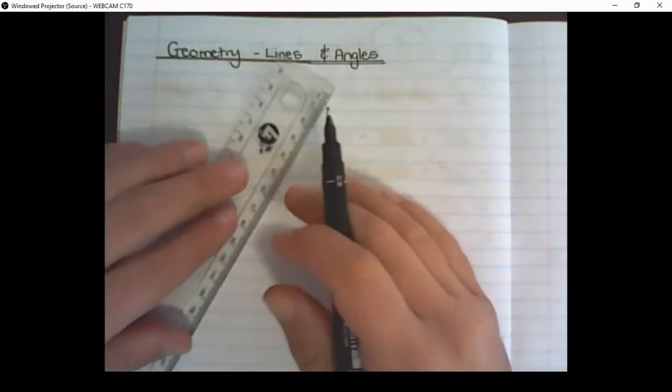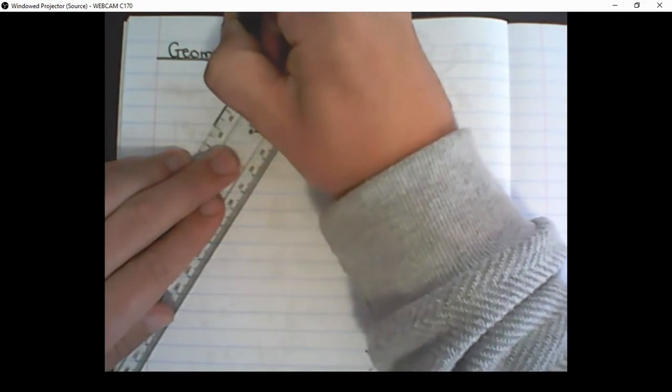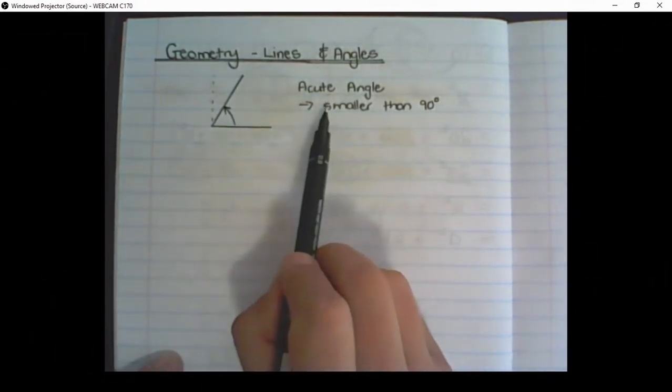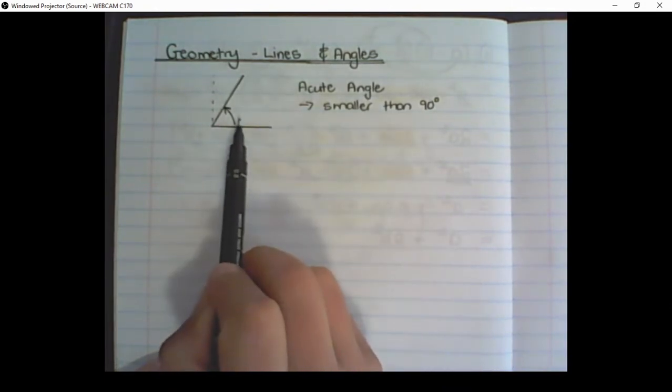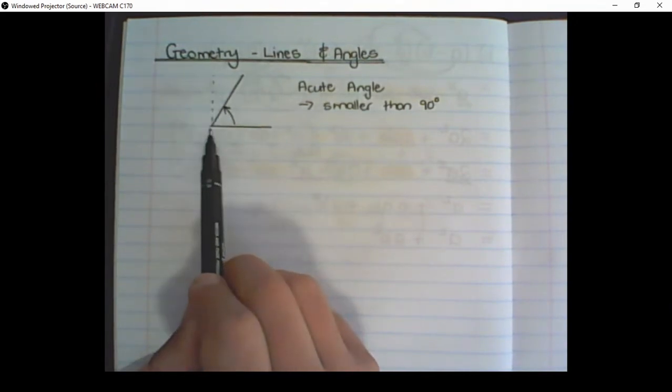Let's just start with the different types of angles that we have. The first type of angle that we have is called an acute angle. It is an angle that is smaller than 90 degrees. So if we look at this sketch, we can see that the angle formed is less than 90 degrees.